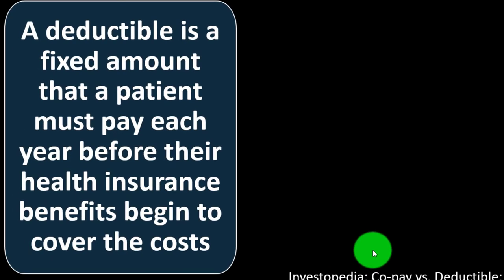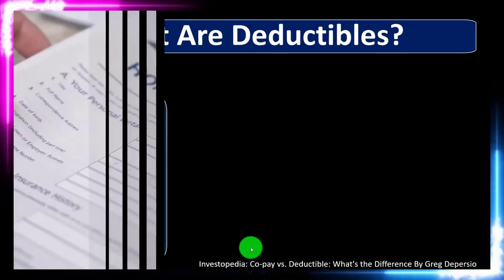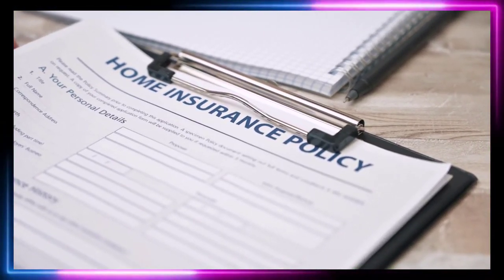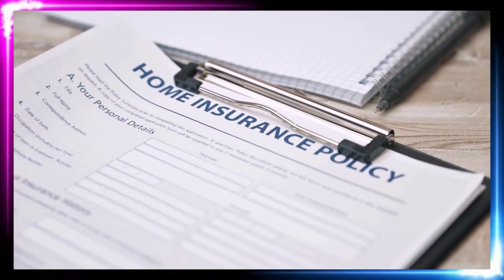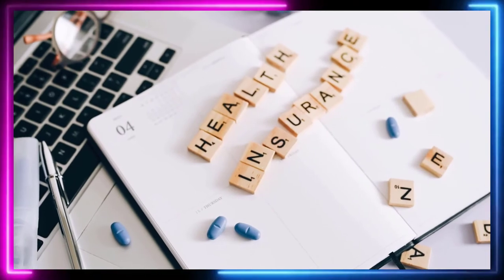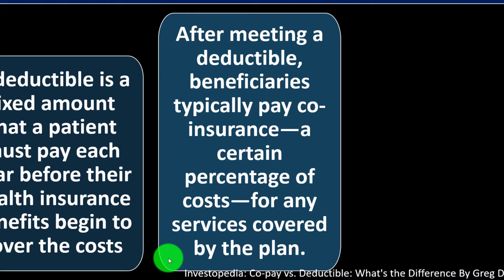A deductible is a fixed amount that a patient must pay each year before their health insurance benefits begin to cover the costs. This is similar to the traditional deductible concept with other kinds of insurance like property insurance — you have to clear the deductible before the insurance kicks in. That way you're insuring against a big event. The deductible fits into health insurance in a more complex way.